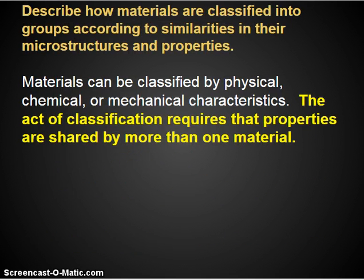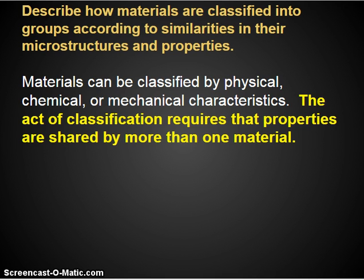Materials are classified into groups according to similarities in their microstructures and properties. There are different categories for separating materials: physical properties, chemical properties, and mechanical properties — all of these create classification systems. What's important to realize is that when you classify a material, the classification needs to apply to more than one material. You cannot have a category that contains only a single item, just as in an outline you shouldn't have just one item in a category — there have to be multiples.